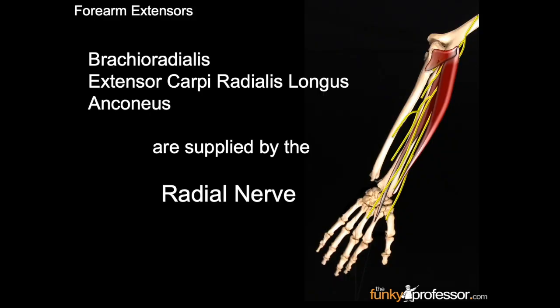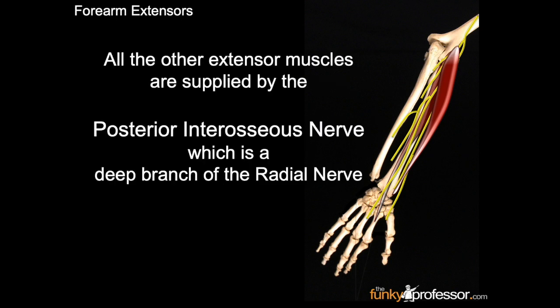Nerves. The brachioradialis, extensor carpi radialis longus, and anconeus are all supplied by the radial nerve. All the other extensor muscles are supplied by the posterior interosseous nerve, which is the deep branch of the radial nerve.